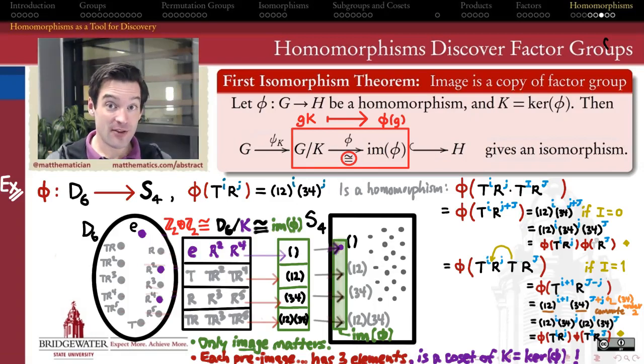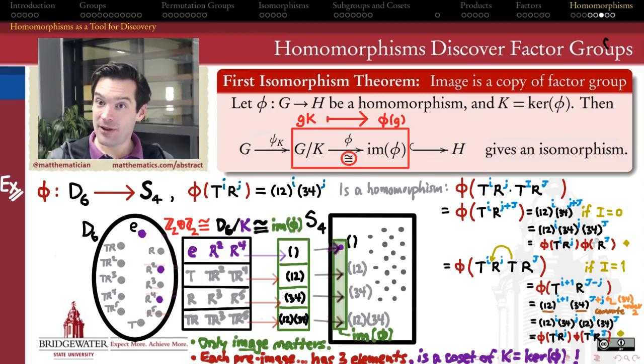So now that we've seen what the first isomorphism theorem can do, let's take a turn and figure out if we can prove it. Is it always true? Does it always work this way? Can it be this cool? Fortunately the answer is yes.